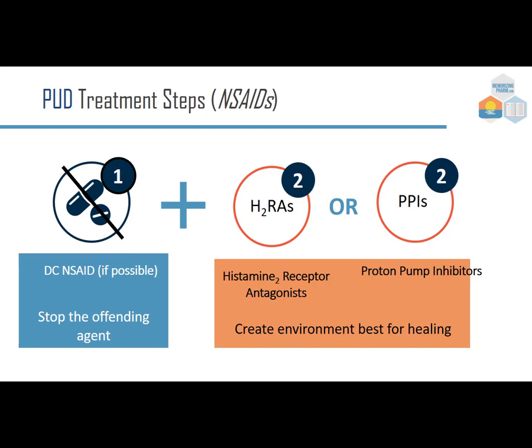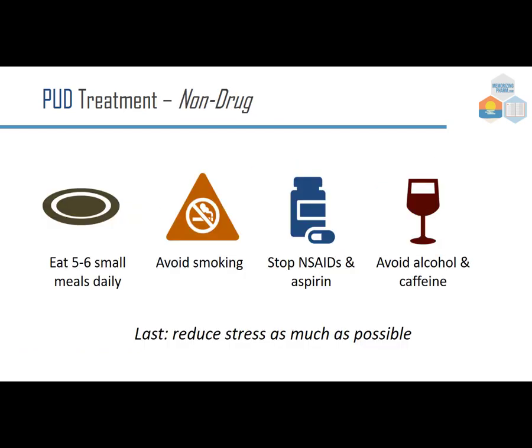Non-drug treatments include eating five to six small meals daily — smaller meals produce less acid — avoiding smoking, stopping NSAIDs and aspirin, avoiding alcohol and caffeine, and reducing stress. Of these, eating five to six small meals daily tends to be the most effective non-pharmacological intervention.